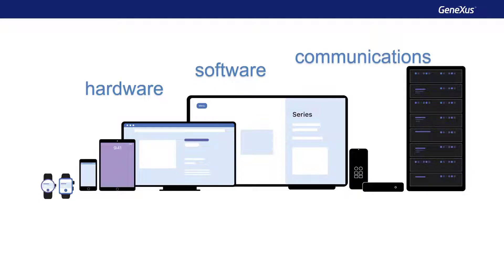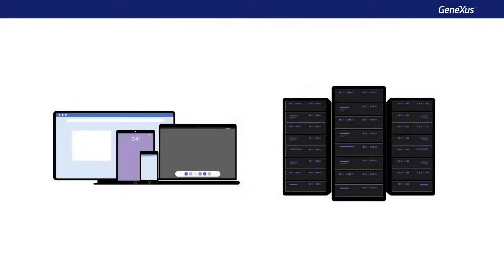To narrow this scope, we'll focus on web and mobile applications. Both web applications and native mobile applications have a part that runs on the platform that the user is interacting with, which is called the client device, and another part that runs on a computer dedicated to serve applications, which is usually called the server.